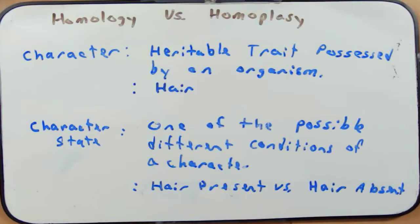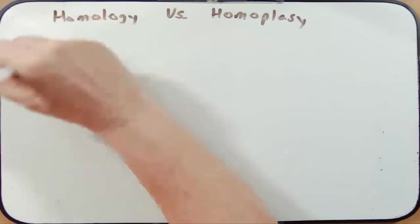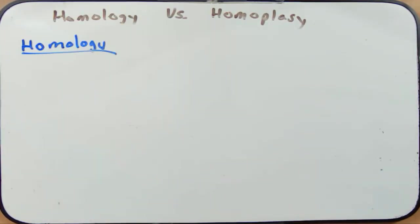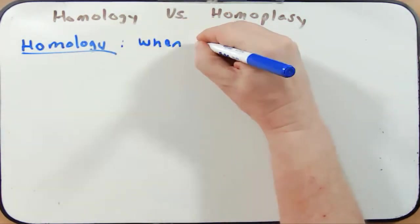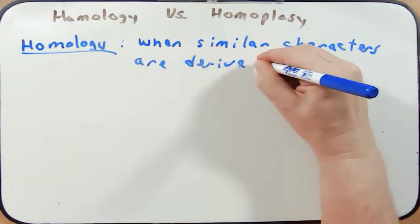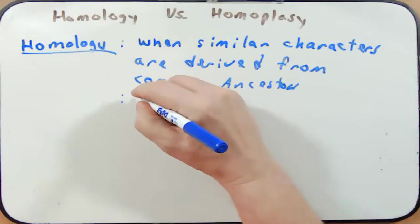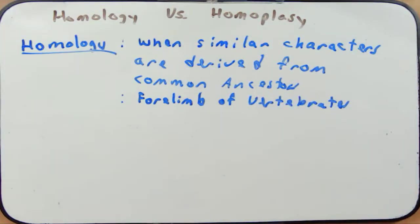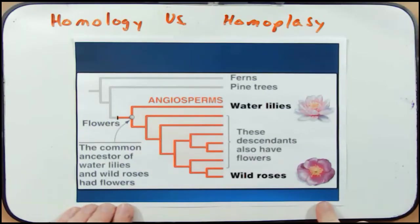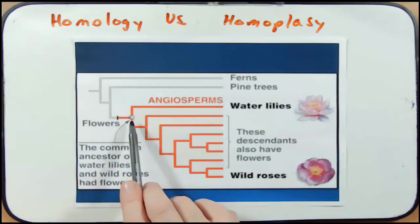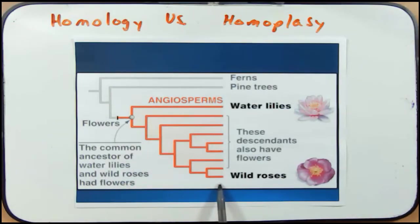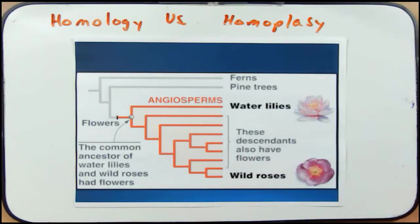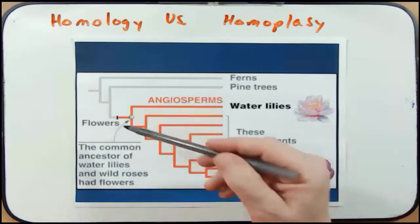With the idea of what a character is, let's move on to homology versus homoplasy. Homology is when similar characters are derived from common ancestors. A classic example is the forelimb of vertebrates, but first let's see how homology works on a phylogenetic tree. The angiosperms — flowering plants — provide a great example: a common ancestor had the trait of flowering, and all its descendants, from water lilies to wild roses and everything in between, also have that trait.